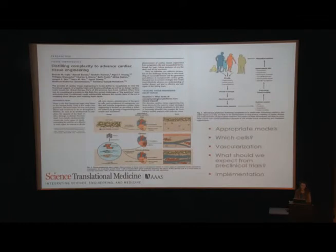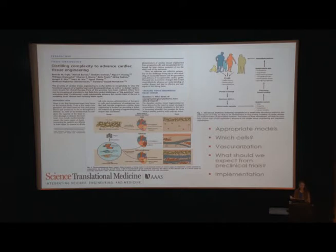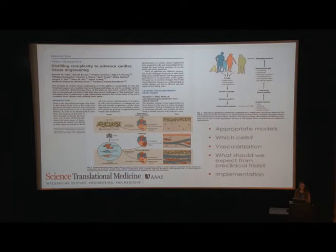I also have to mention this perspective, which came out of a meeting in 2015. You'll notice that many of our speakers today are co-authors on this manuscript. What we liked about this perspective is it raised five important questions in the field: What are appropriate models for cardiac tissue engineering? What cells should we be using? How important is vascularization and how will we achieve that? What should we expect from preclinical trials? And how will we implement these cardiac tissues going forward?